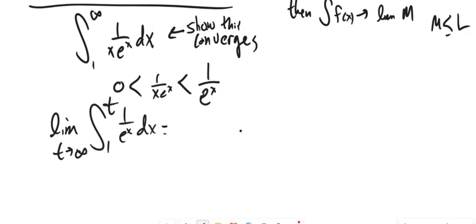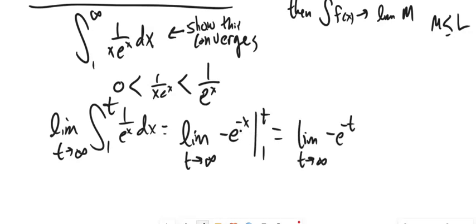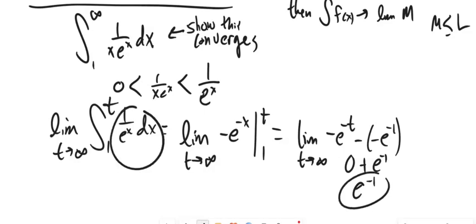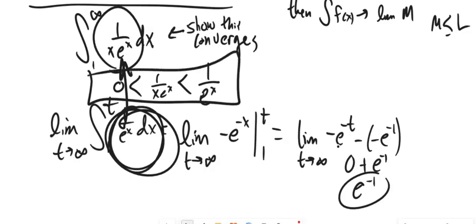Let me fix this up and let the limit as T goes to infinity of that. As T goes to infinity, this goes to zero because it's like one over negative e to the power of T. So zero plus e to the negative one. So this converges. Since this converges, that must converge because this is true.